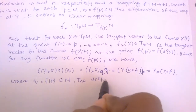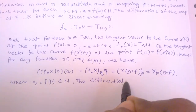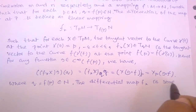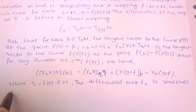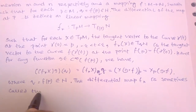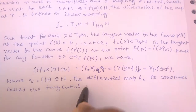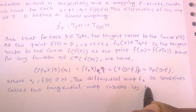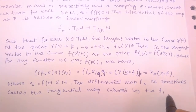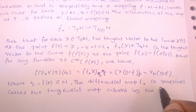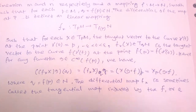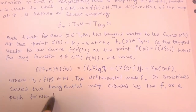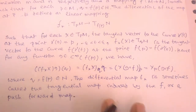The differential of the map, where F* is sometimes called the tangent shield map or the tangent map induced by the map F: M → N. It is also known as the pushforward map or forward map.